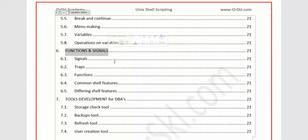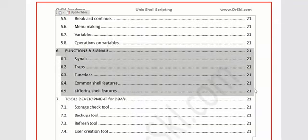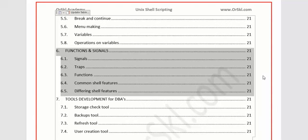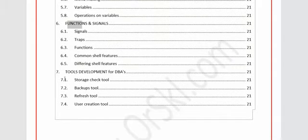Functions and signals are also very important. A function takes some input, processes it, and gives back an output. Functions are essential when you want to reuse a set of commands — whether inside a loop or outside based on a condition. We'll deal with writing functions and what different signals functions generate automatically. The last and very important chapter is tools development for DBAs.